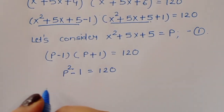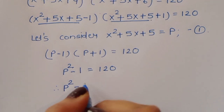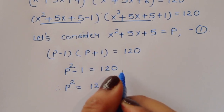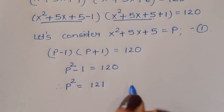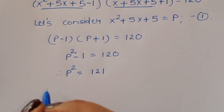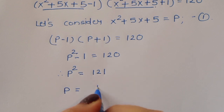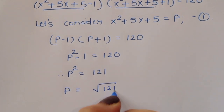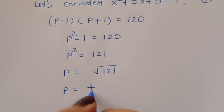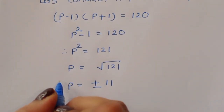Therefore p² = 120 + 1 = 121. Taking the square root of both sides, p = √121, so p = ±11. These are the two values of p.